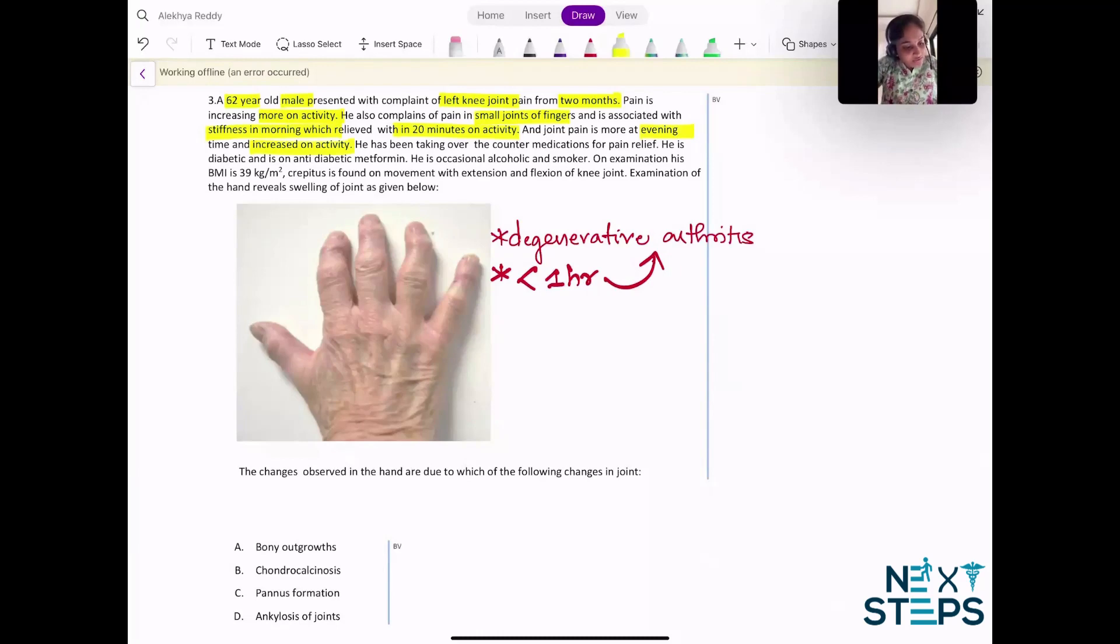Joint pain is more at evening time, so no morning stiffness, and increases with activity, relieved with rest, all signifying degenerative arthritis. He's been taking OTC medications for pain relief. He's a diabetic on metformin, occasional alcohol and smoker.